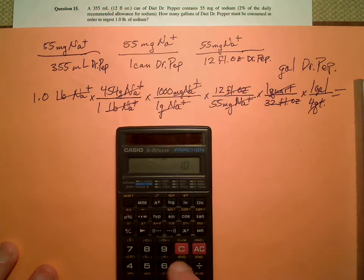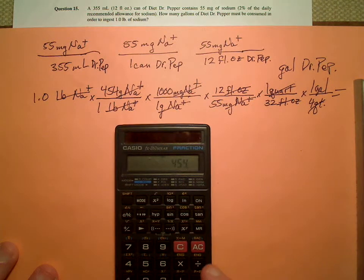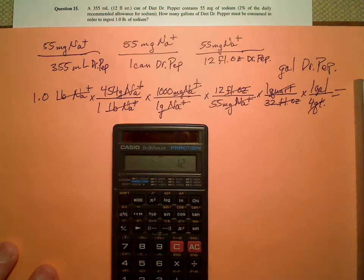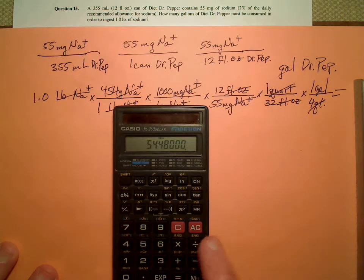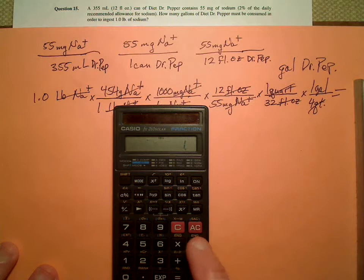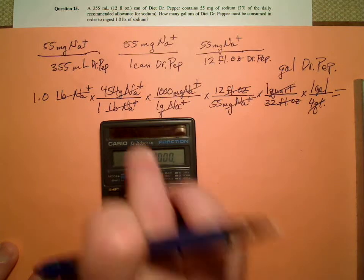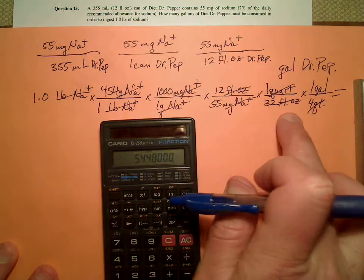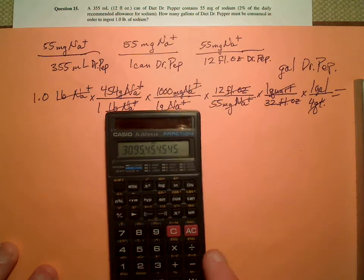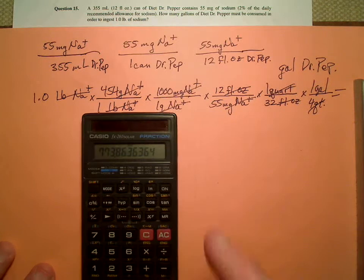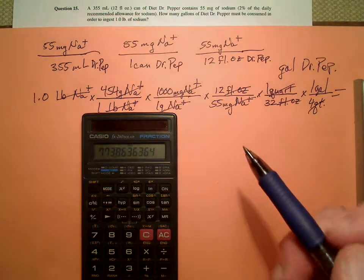So I have 1.0 times 454 times 1,000 times 12 times—oh I hit times again—I'll just do divided by, just 65—oh—and 32 and 4. Divided by 55, divided by 32, divided by 4, equals, whoa, that's a lot.